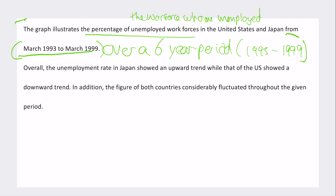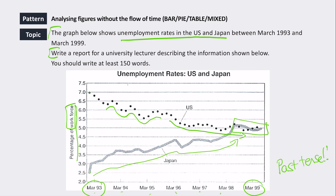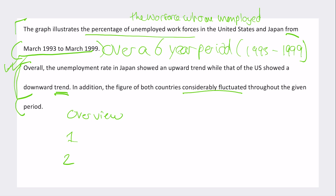After the introduction sentence comes the overview: 'Overall, the unemployment rate in Japan showed an upward trend, while that of the US showed a downward trend. In addition, the figure of both countries considerably fluctuated throughout the given period.' This is a very solid overview — it identifies the two main trends (decreasing US, increasing Japan) and notes the fluctuations. No problems here.